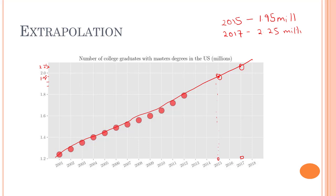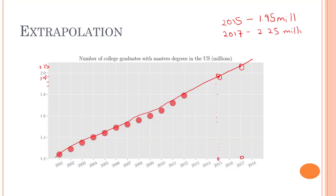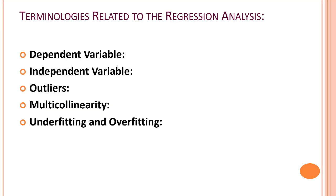Before we end this up, there are some terminologies related to regression analysis that you should know. First one is dependent variable. From the previous example that we looked into, we have number of years and number of students.